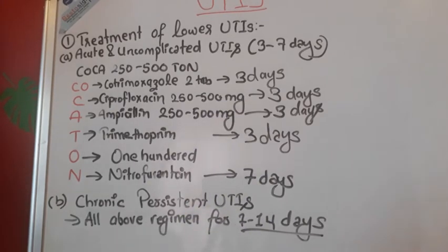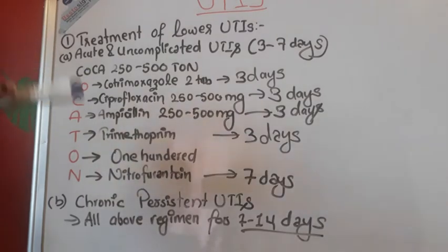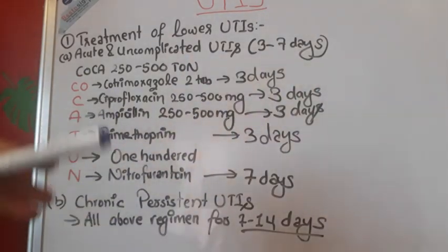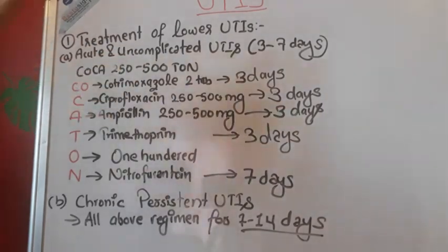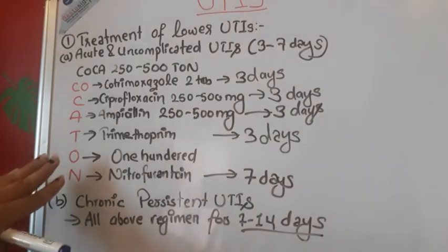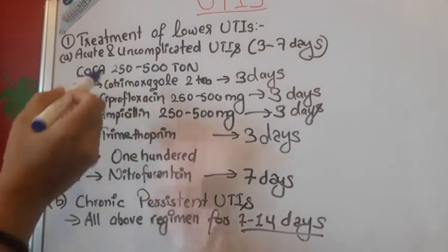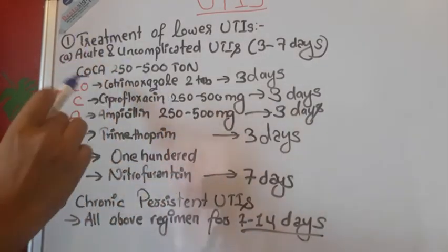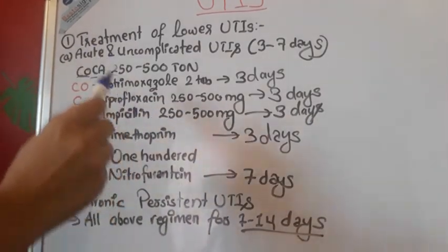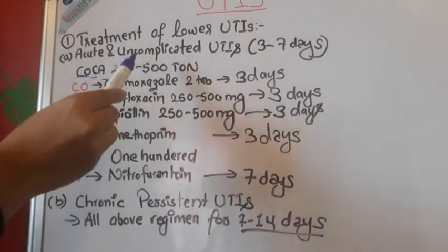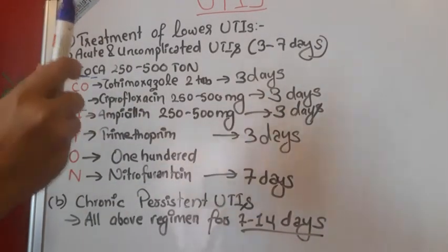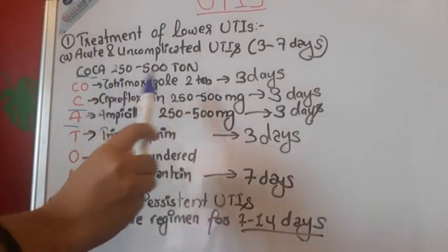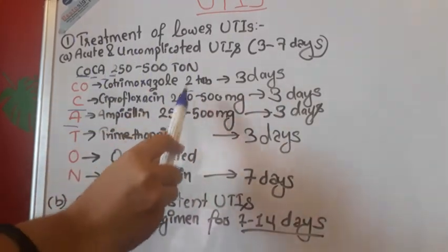The mnemonic I have made is 'COCA 250 to 500 TON.' CO stands for cotrimoxazole — two tablets; C stands for ciprofloxacin 250 to 500 mg; A stands for ampicillin 250 to 500 mg. The dose range of 250 to 500 mg applies to ciprofloxacin and ampicillin for the treatment of lower UTIs.